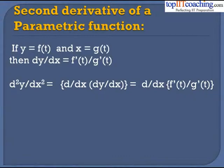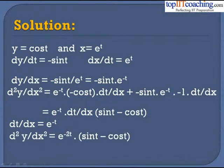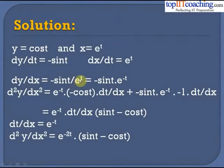Example: y = cos t and x = eᵗ. Find d²y/dx². Differentiating: dy/dt = −sin t and dx/dt = eᵗ. So dy/dx = −sin t / eᵗ = −sin t · e^(−t).